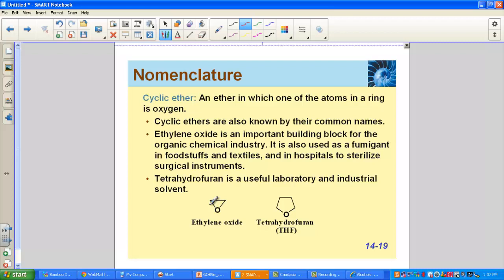In cyclic ethers, one of the atoms in the ring is oxygen. These ethers are known by their common names. Ethylene oxide in this particular structure is an important building block for the organic chemical industry. We'll talk more about ethylene oxide in a couple sections. Tetrahydrofuran is a very important laboratory and industrial solvent, abbreviated THF.